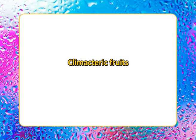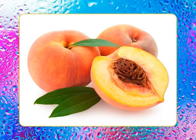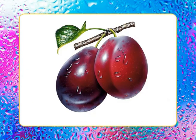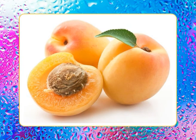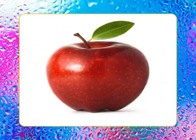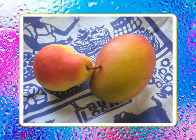Climatic fruits ripen faster after harvesting, have a high respiration rate, high respiration coefficient (that is, volume of carbon dioxide evolved to volume of oxygen consumed), produce large amounts of ethylene, and have low shelf life. Examples include peach, plum, apricot, apple, pear, and mango.